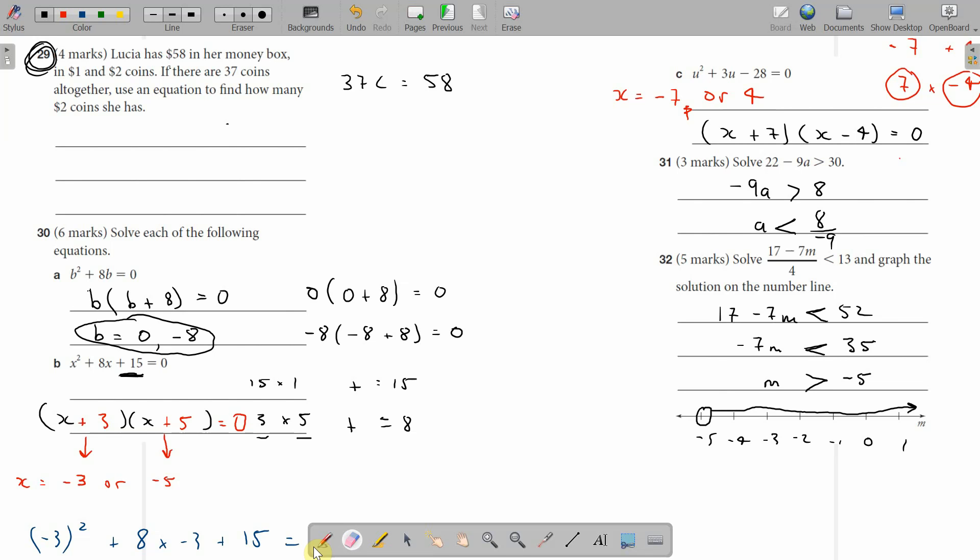Hello Year 10, let's look at question 29 which proved difficult the first time through section B, but I think I figured it out. She has $58 in a money box in $1 and $2 coins. If there are 37 coins altogether, use an equation to find out how many $2 coins she has.